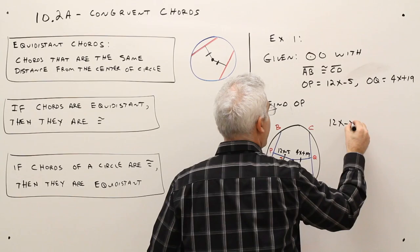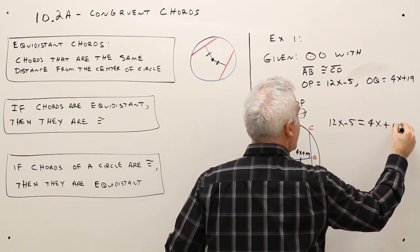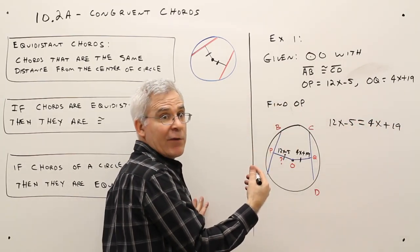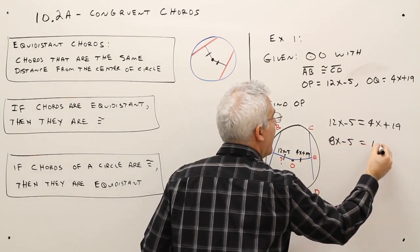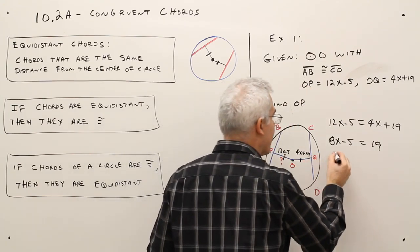So 12X minus 5 equals 4X plus 19. Subtract 4X from each side, 8X minus 5 equals 19. Add 5 to each side,